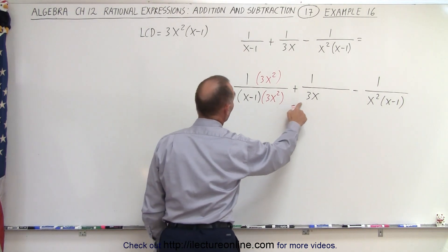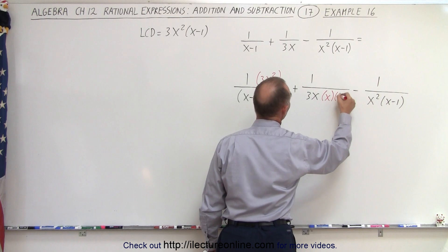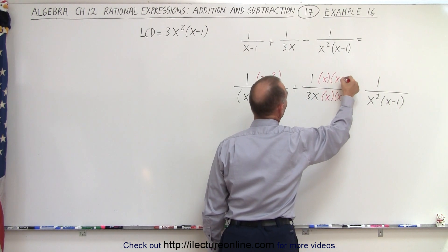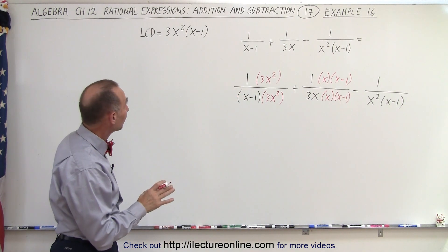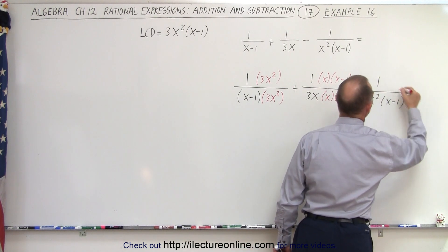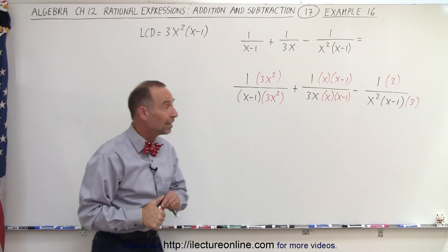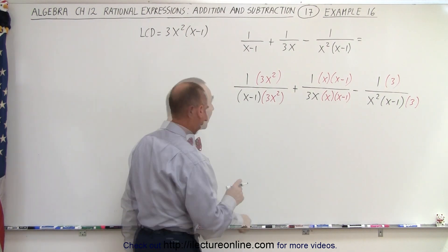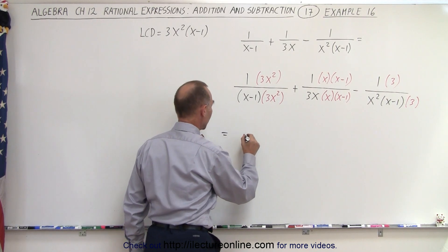Over here, we have 3 and 1 of the x's, but we're still missing an x times an x minus 1. So we have to multiply the numerator with an x and an x minus 1 as well. And finally, the final denominator, we're missing a 3, so we're going to multiply this times 3. That means we have to multiply the numerator by 3 as well. Now you can see that we have all three denominators exactly the same.